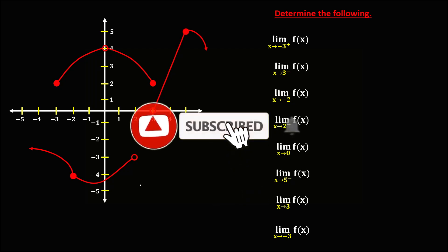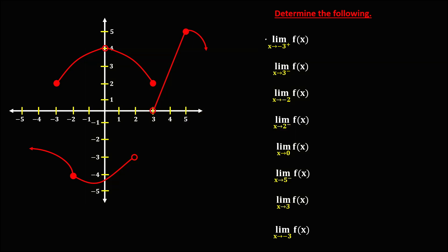So let's solve this problem. Given a graph, we need to evaluate the limits. For the limit of f of x as x approaches negative 3 from the right, this is x equals negative 3, and since we are approaching from the right, this is the right side limit. Therefore, the limit exists and the limit is equal to positive 2.